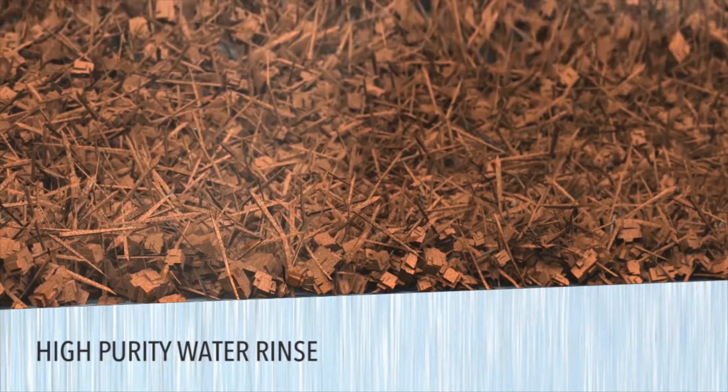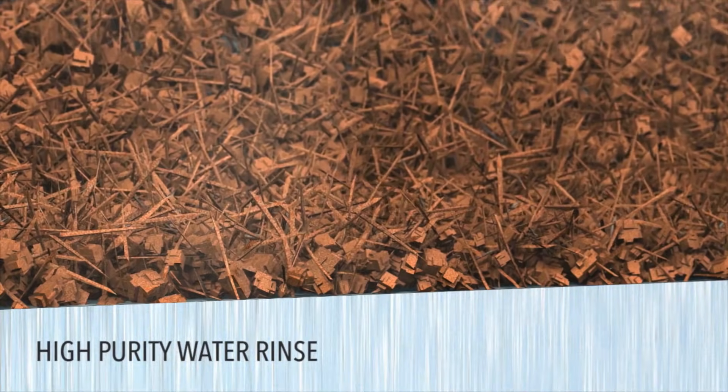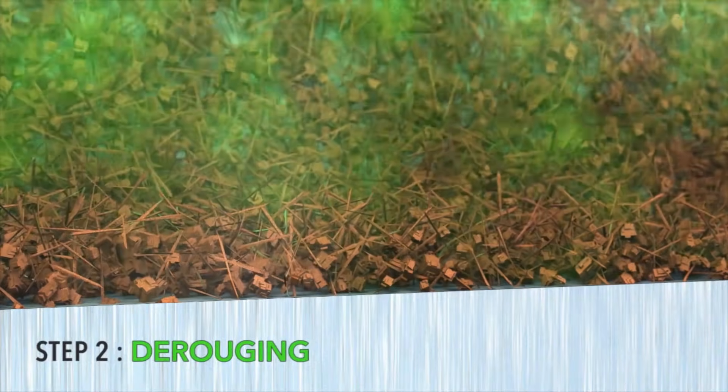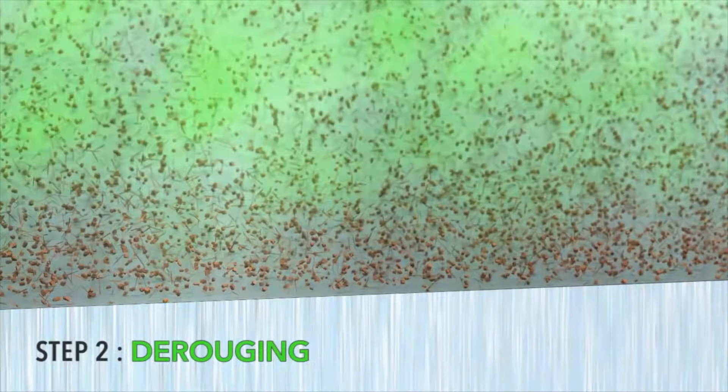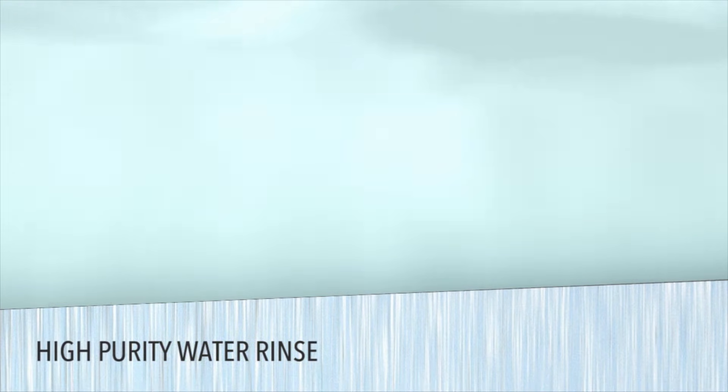And now we have a relatively clean surface, but it has rouge on it. So now we're going to continue to process, remove the rouge, and at the end of the de-rouging, again, between each step is the rinse that rinses out any loose particles or chemistry debris.